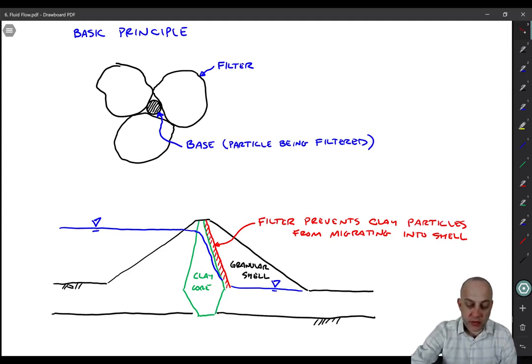So what we do is place a filter layer. As the clay core is being compacted, we crush, usually it's crushed rock, and we will put it right next to the clay core. And the filter will have a grain size that's intermediate between the grain size of the core and the grain size of the granular shell. So it's kind of a transition.